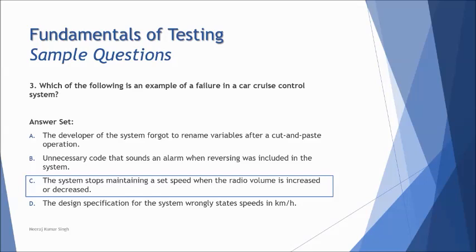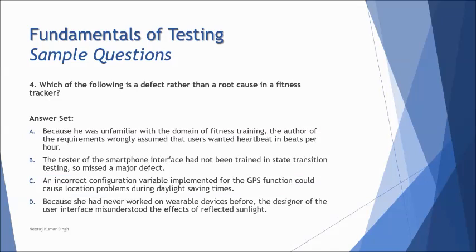Question number four: which of the following is a defect rather than a root cause in a fitness tracker? Now the question remains the same, but this is how they just differently put the same thing to you. Now they just want to know the same thing, that what is a failure, and they would have given root causes as well, but the system is different. Now it is a fitness tracker. Because he was unfamiliar with the domain of fitness training, the author of the requirements wrongly assumed that users wanted heartbeat in beats per hour. The tester of the smartphone interface had not been trained in state transition testing so missed a major defect. An incorrect configuration variable implemented for the GPS function could cause location problems during daylight saving times. And because she had never worked on wearable devices before, the designer of the user interface misunderstood the effect of reflected sunlight.